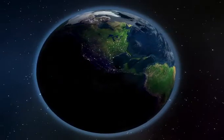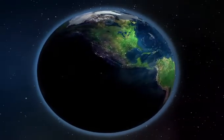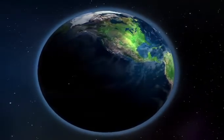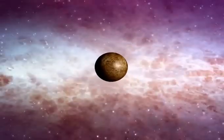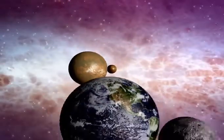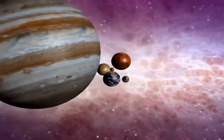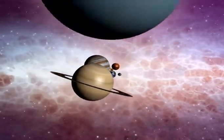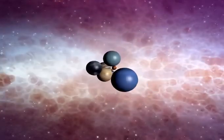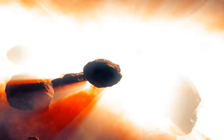Matter further out in the disk was also clumping together. These clumps smashed into one another, forming larger and larger objects. Some of them grew big enough for their gravity to shape them into spheres, becoming planets, dwarf planets, and large moons.